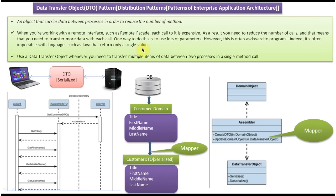It is often impossible with languages such as Java that return only a single value. Java usually returns a single value, so if you want to get multiple pieces of information from the server, populating a DTO on the server side with more information and passing it to the client is the solution. Use a data transfer object whenever you need to transfer multiple items of data between two processes in a single method call. Thanks for watching, bye.